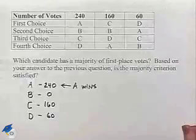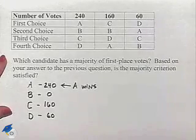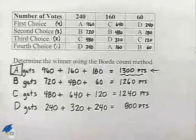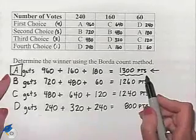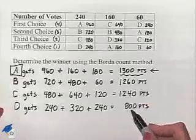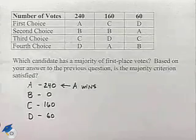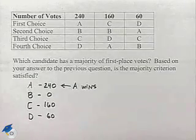We've just looked at the preference table, which was similar to the one that we did using the Borda count method. Notice that in using the Borda count method, A is the winner. So this method is not going to violate the majority criterion since when we look at it using plurality, A is also the winner.